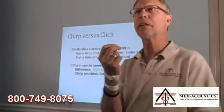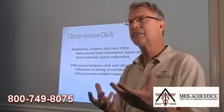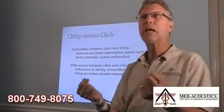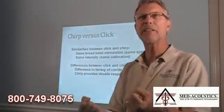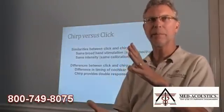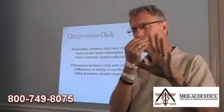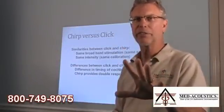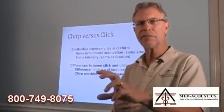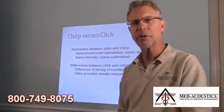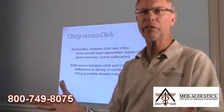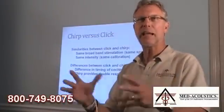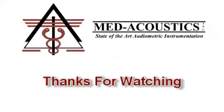In the case of the chirp stimulus, the needle is now not a needle — it's like a shovel. So we can do much less averaging to find it and get rid of the haystack, because it's so much bigger. There are several benefits to using a chirp instead of a click when doing a threshold ABR, and one of them is saving time. It saves a tremendous amount of time — it can be done in less than half the time it would otherwise take.